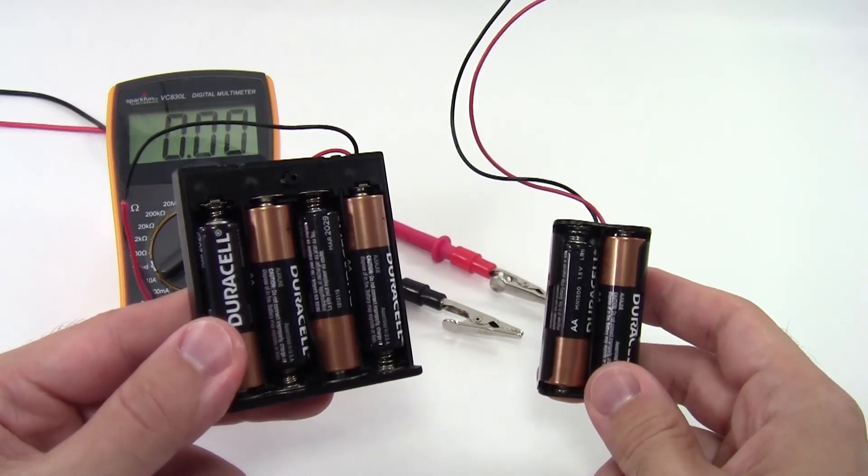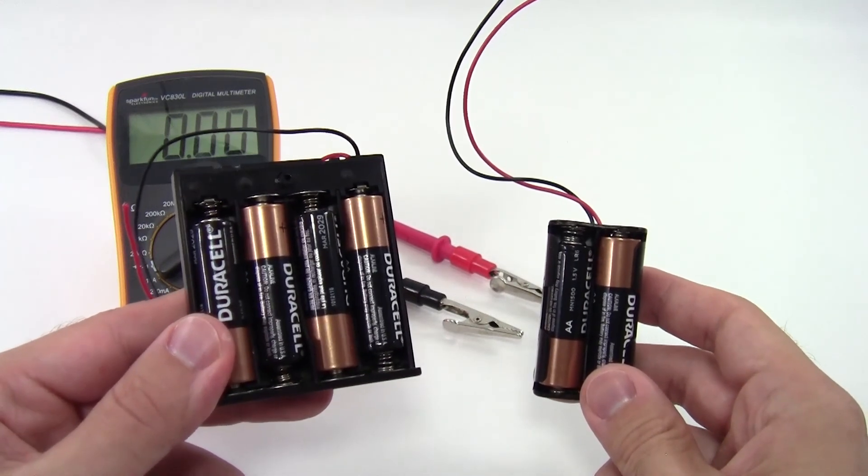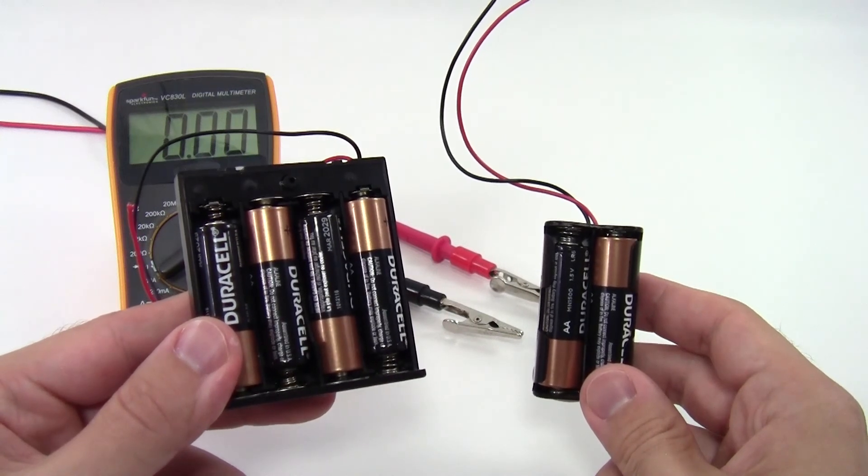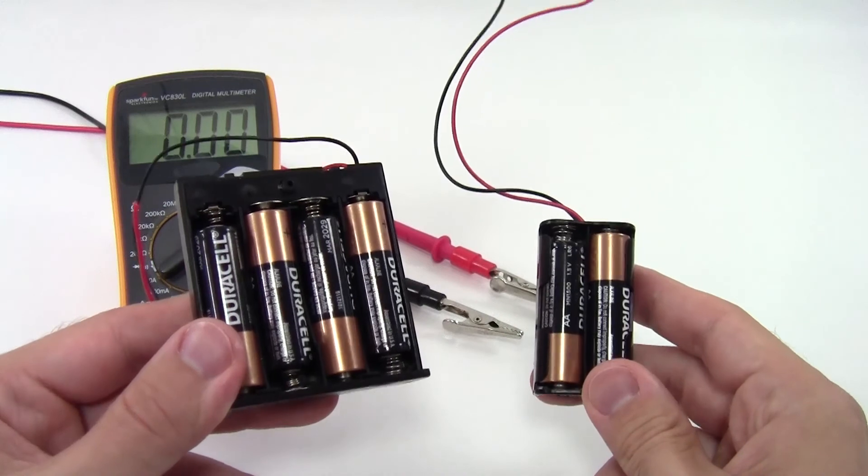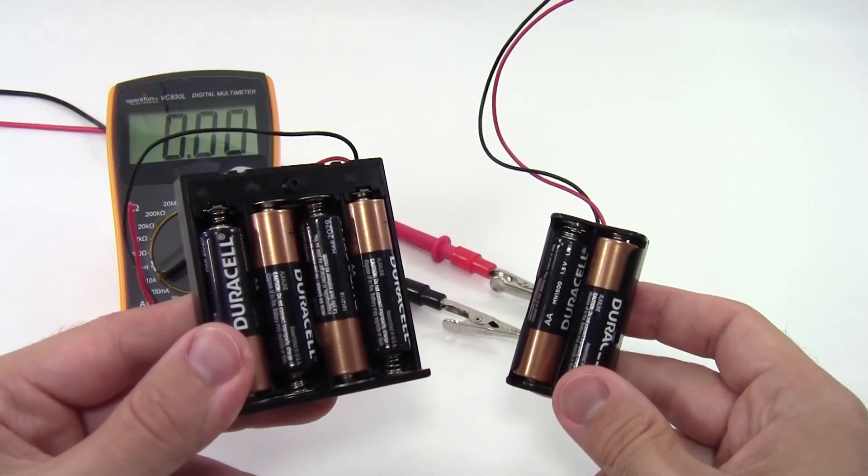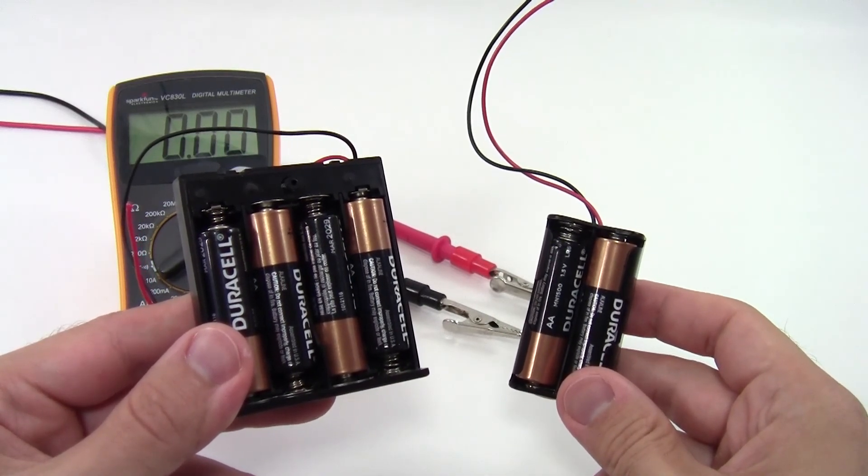You also have to be careful if you're doing a larger project, like an electric vehicle, where the internal resistance can cause the batteries to get hot, and they might require active cooling. You probably won't see that with these little AA battery packs, but it's something to look out for if you're doing a larger project.